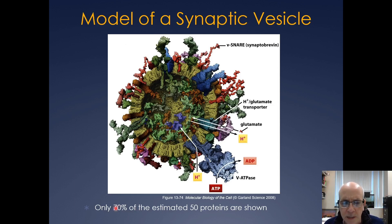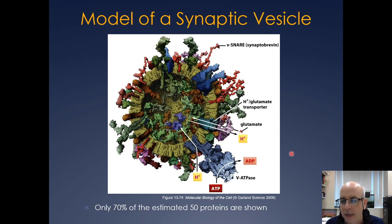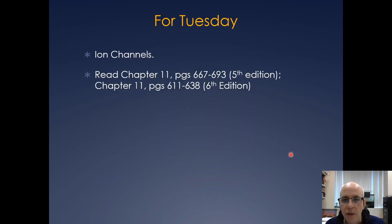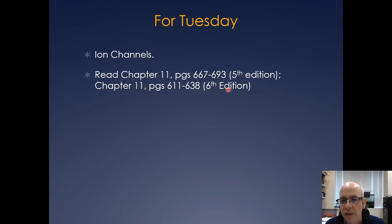In this image only about 70 percent of the estimated 50 proteins are shown, and in the other one they show more as well as showing the plasma membrane. So I think that's all I had for today. Next week we're going to cover ion channels, so read chapter 11 in the 5th edition or the corresponding pages in chapter 11 in the 6th edition. And if you guys have any questions, just shoot me an email.